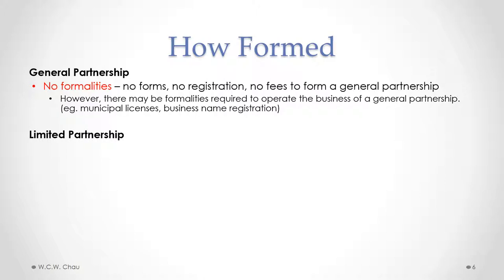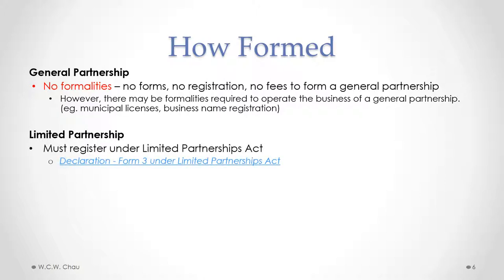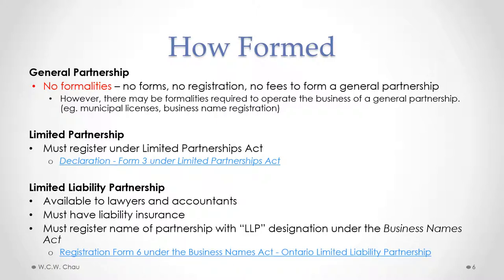For the other types of partnerships: for a limited partnership, to get that limited partnership status, we have to register under the Limited Partnerships Act — there is a specific form that has to be filled out and filed. For the limited liability partnership, the name of the partnership has to be registered with the LLP designation under the Business Names Act. This type of partnership is available only to partnerships of lawyers and accountants, and a requirement to get LLP status is that the law firm or accounting firm must have liability insurance.